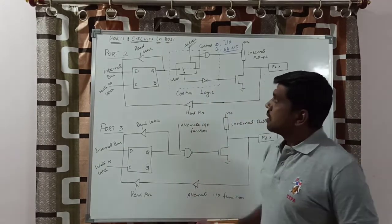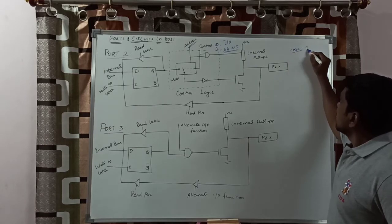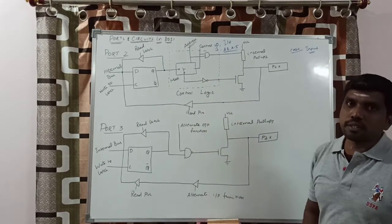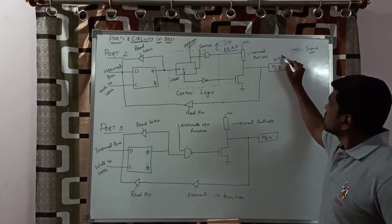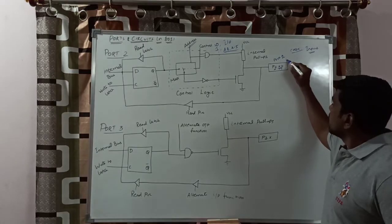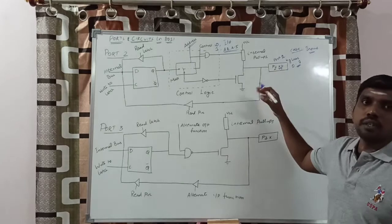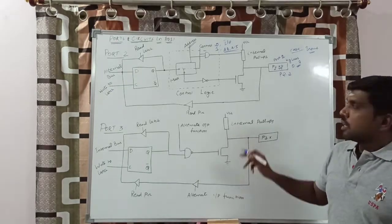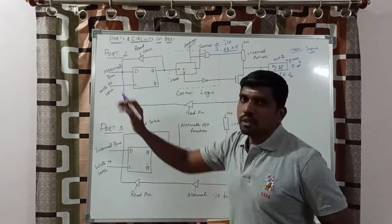Now we go for the function of port 2. Case 1: it acts as input — the microcontroller is accessing input from the external side. P2.x represents port 2, where X represents the line, or input line. Port 2 contains 8 lines, 0 to 7. You can represent any one line; for example, P2.2 means the second line of port 2. Whatever data is applied, that data is entered into the microcontroller.